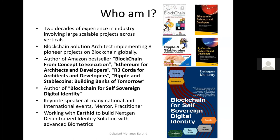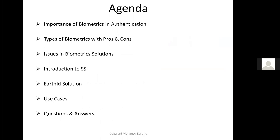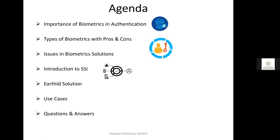I'm a blockchain author as well, and my latest work is blockchain for self-sovereign digital identity. In today's session, I'll be covering biometrics-based authentication, different types of biometrics with their pros and cons, and the issues in biometric solutions. I won't go into detail on SSI since most of you are aware how self-sovereign identity works, but I'll touch on it so you'll know how these two technologies can work together and come up with the Earth ID solution. We'll discuss use cases in production or pretty close, some innovation in this field, and if time allows, a question and answer session.